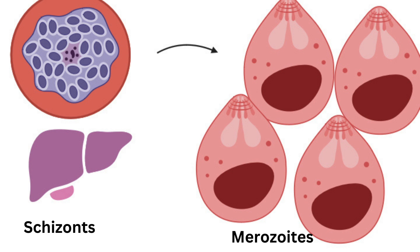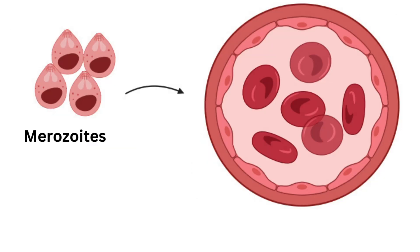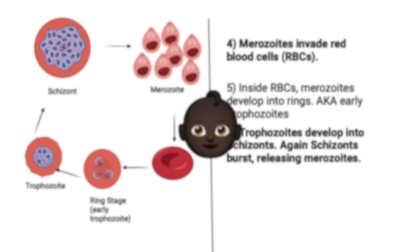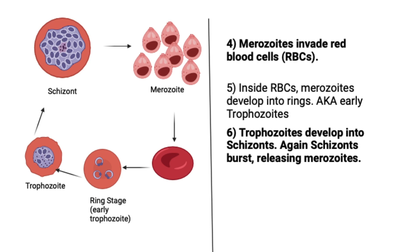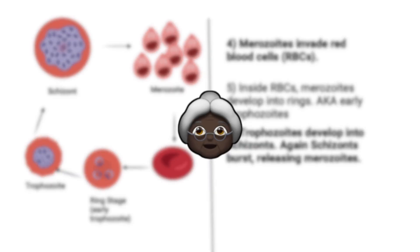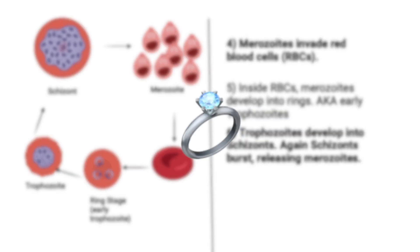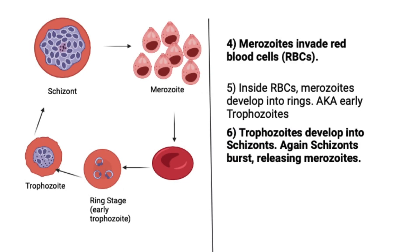The parasite emerges from the liver in a form known as a merozoite. Once free from the liver, it looks for red blood cells. The newly released merozoites enter red blood cells, where they follow various stages of development — just like humans go through stages such as baby, toddler, adolescent, teenager, youth, adult, and elderly. In the red blood cells, the merozoite first enters the stage known as the ring stage, also known as an early trophozoite.